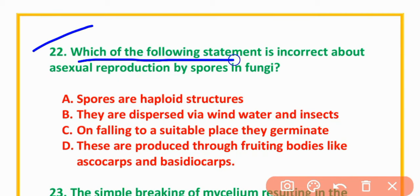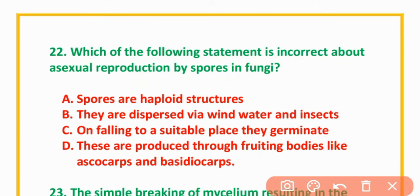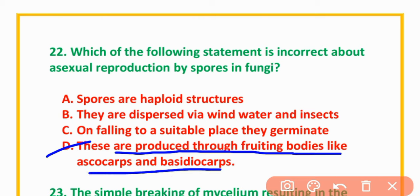MCQ Number 22: Which of the following statements is incorrect about asexual reproduction by spores in fungi? Options: Spores are haploid structures; they are dispersed by wind, water and insects; on falling to a suitable place they germinate; they are produced through fruiting bodies like Ascocarpus and Basidiocarpus. The correct option is option B: they are produced through fruiting bodies like Ascocarpus and Basidiocarpus.